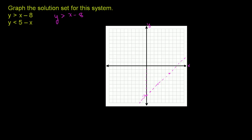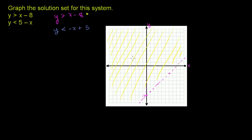That's why I put a dotted line there. So the solution set for y is greater than x minus 8 is all of the area above this line, shown in yellow. Now let's do the second inequality. We have y is less than 5 minus x, or we could write that as negative x plus 5, so it looks a bit more like slope-intercept form. If we were to just graph y equals negative x plus 5, it would look like this.